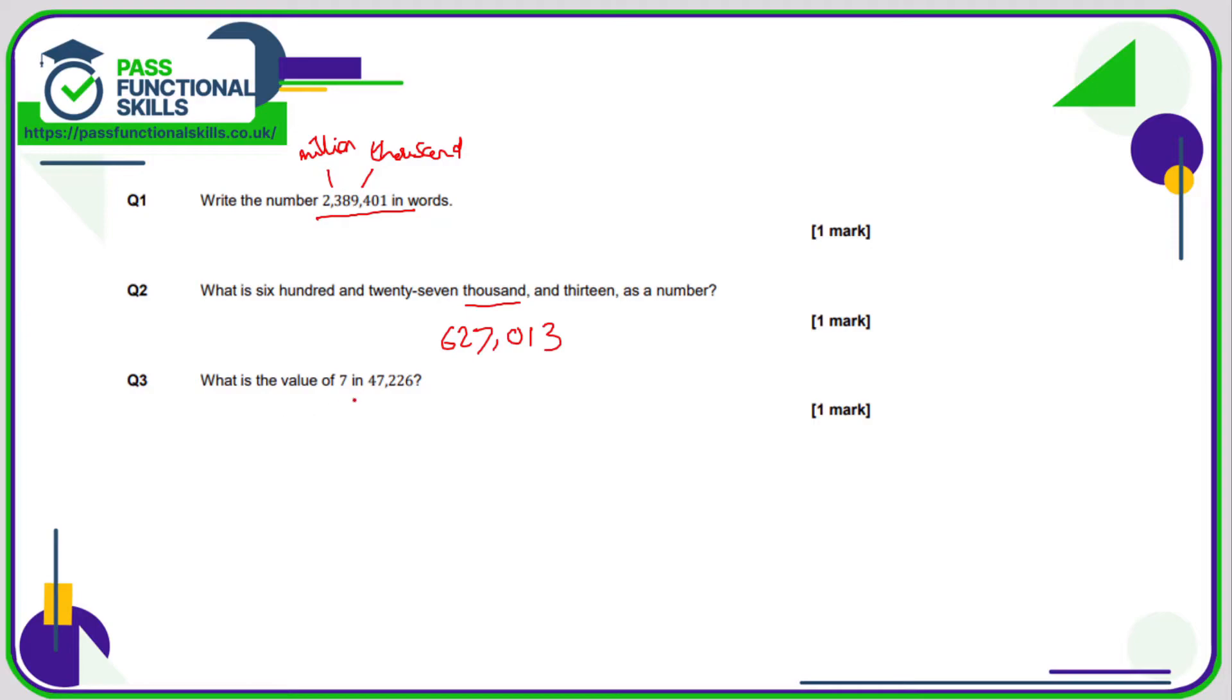Question number three: what is the value of the seven in this number? Well, the six is in the units column, so that's the ones column. The two is in the tens column. This two here is in the hundreds column. So this seven is in the thousands column. So the value of seven in this number is seven times a thousand, which is 7,000.